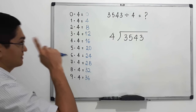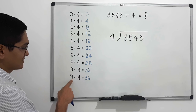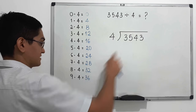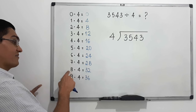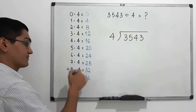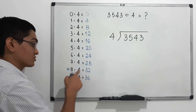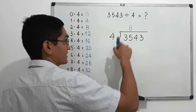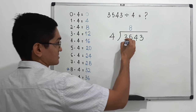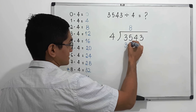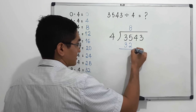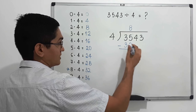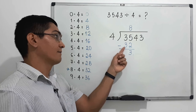We ask the question: what number from zero to nine do we multiply by four to get 35, or almost 35 but not more than 35? Looking at the multiplication table, nine times four is 36, but that's greater than 35. So we stay with eight, since eight times four is only 32. We write eight in our quotient.